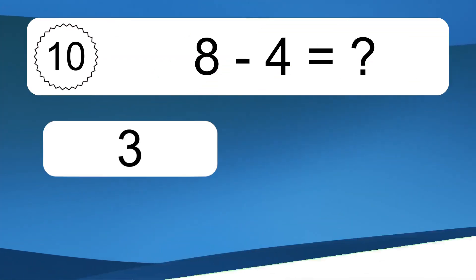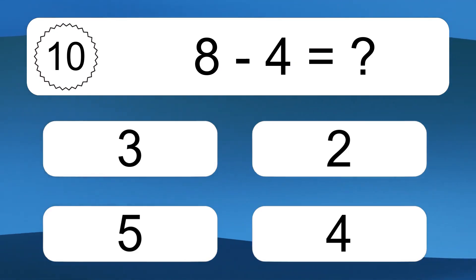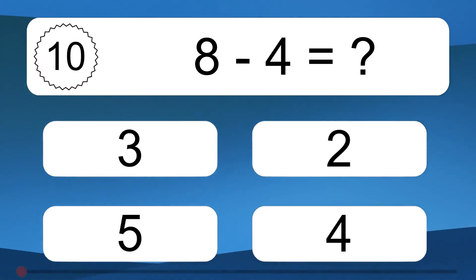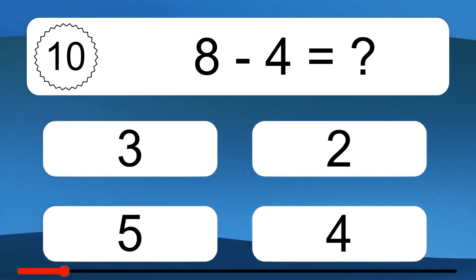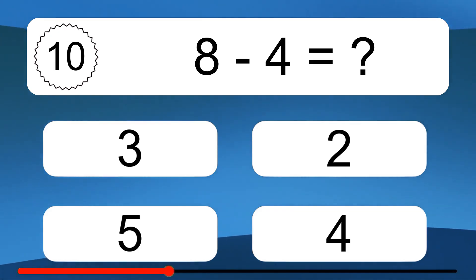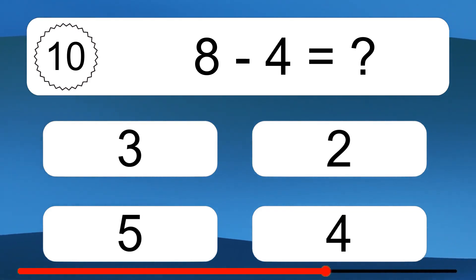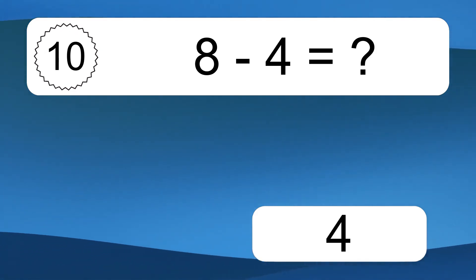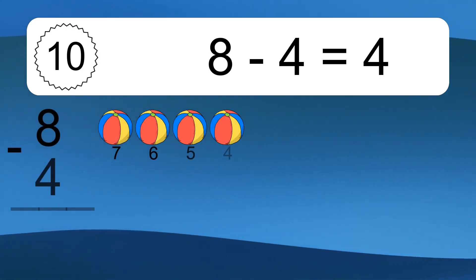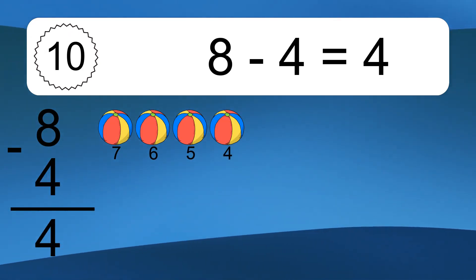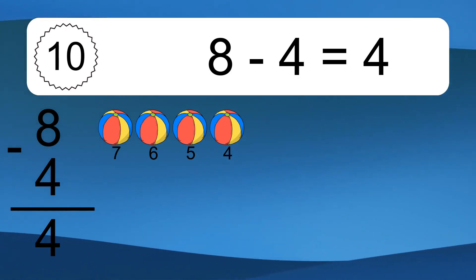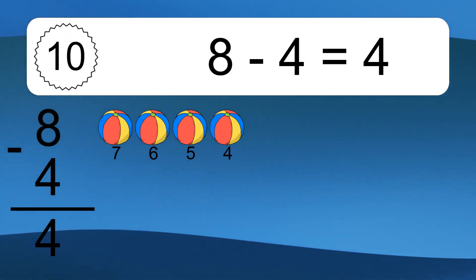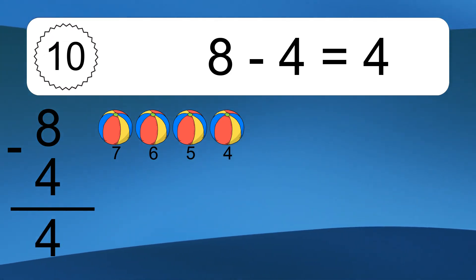8 minus 4 equals what? 8 minus 4 equals 4. Let's count it: 7, 6, 5, 4.